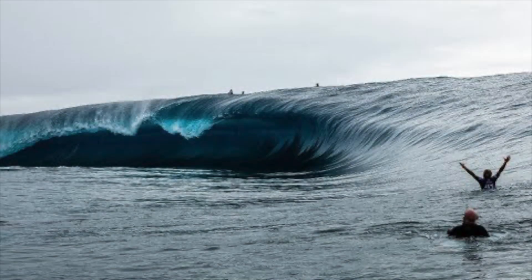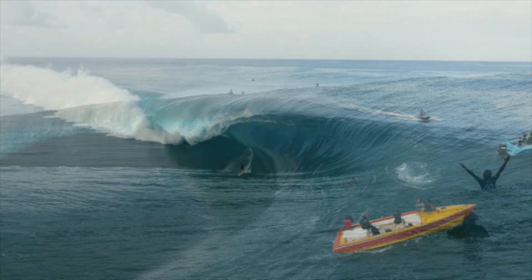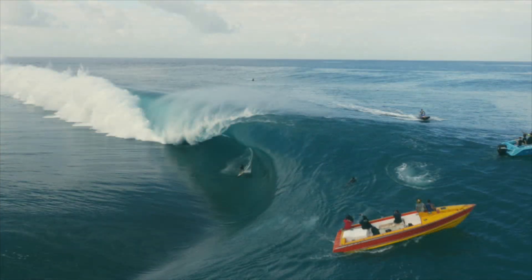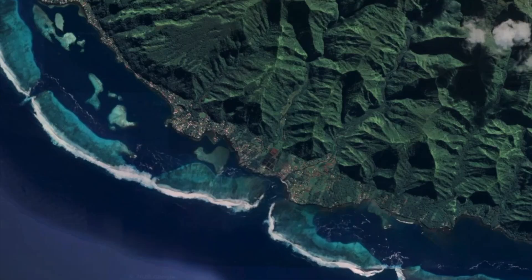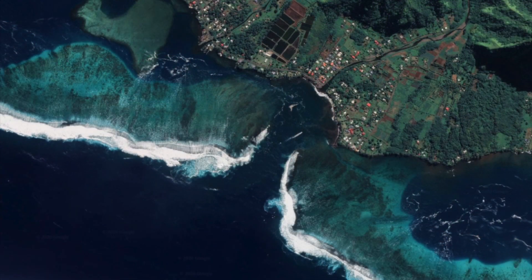Waves like Chope in Tahiti that travel through deep water until hitting an abrupt shallow reef break with almost unimaginable force, as most of the wave's energy is released in a small concentrated area, often breaking at a shallower depth than the typical 1 to 1.3 wave height to depth ratio.